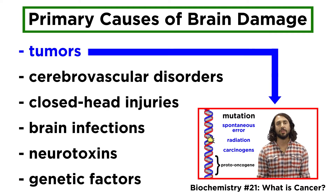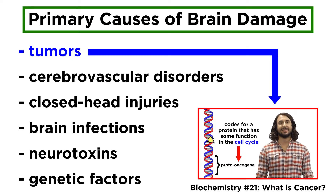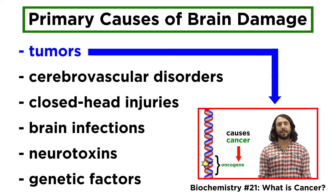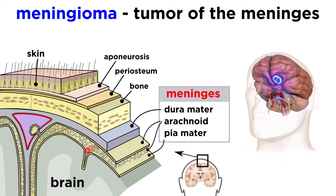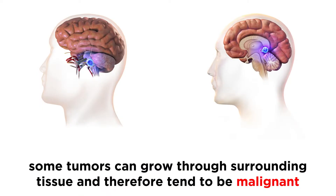Looking at tumors first, we discussed the basics surrounding cancer and tumor development in the biochemistry series, so check out that tutorial if you need a refresher. A common type of brain tumor is a meningioma, which is found between the meninges of the brain. These are encapsulated, or contained within their own membrane, and therefore benign. Meningiomas can be surgically removed, but other tumors are infiltrating, meaning they can grow through surrounding tissue and tend to be malignant and difficult to remove.